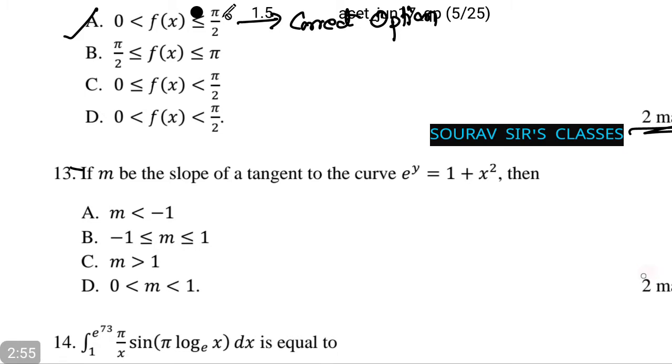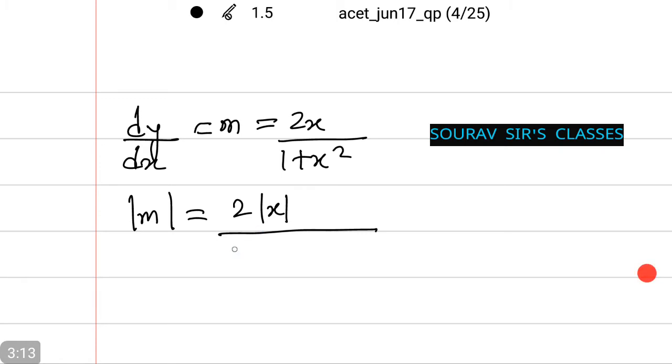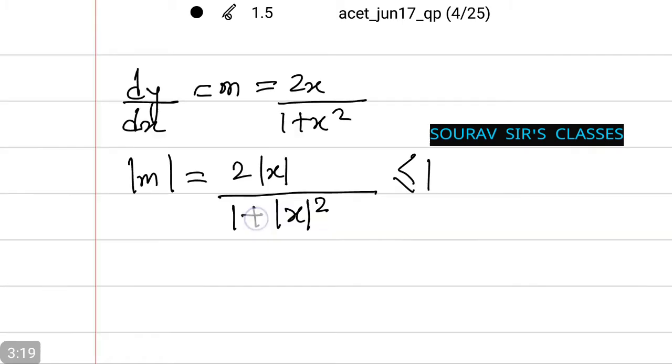Let's see how the process looks like. You can do this by dy/dx equals m, which is equal to 2x divided by 1 plus x squared. Or modulus of m equals 2 modulus of x whole divided by 1 plus modulus of x whole squared, which is less than or equal to 1.